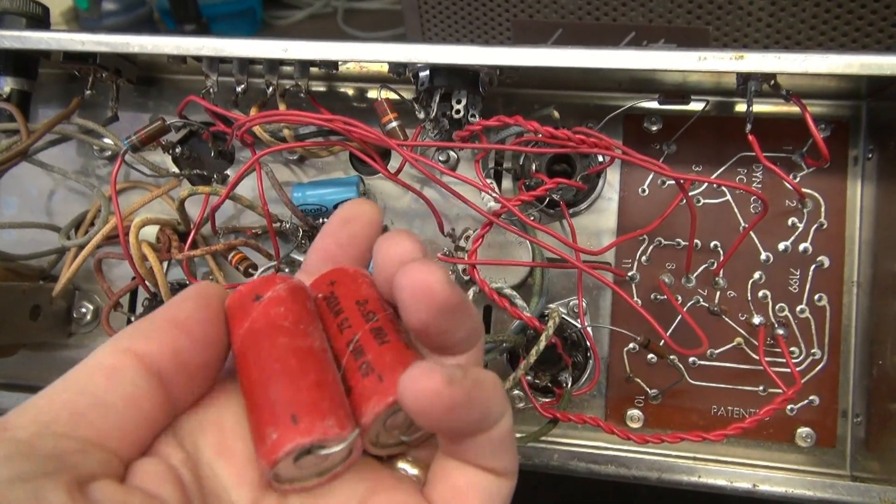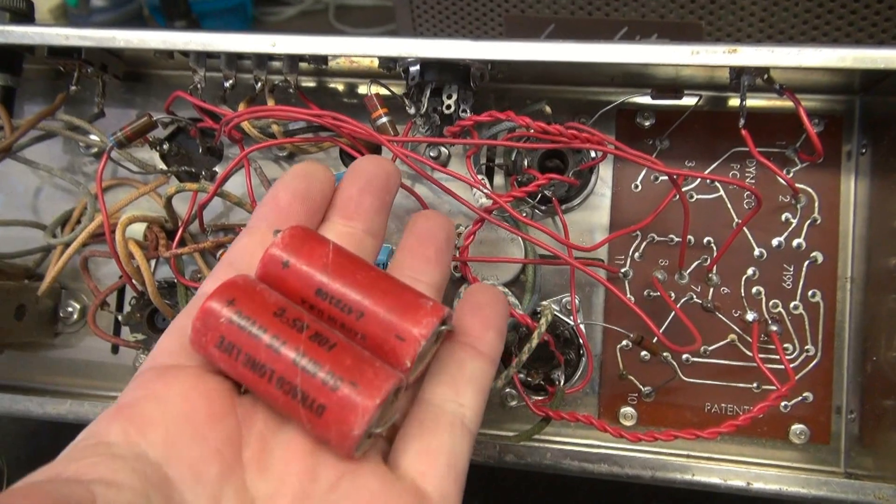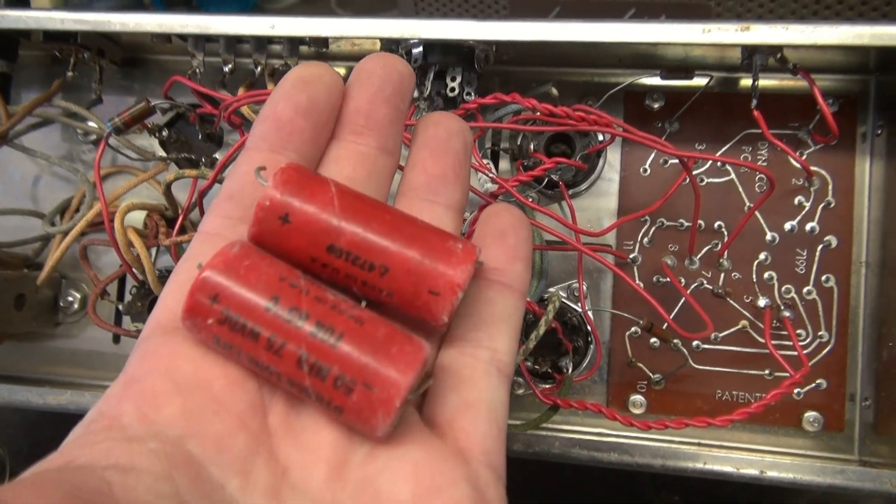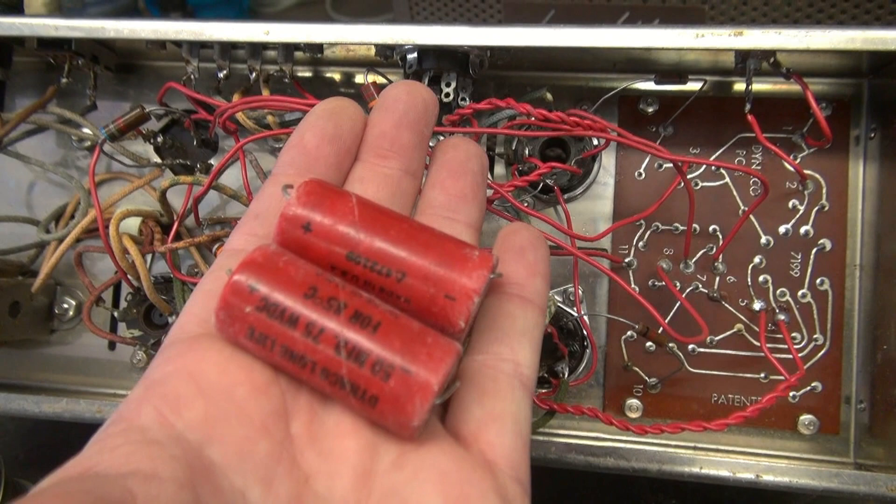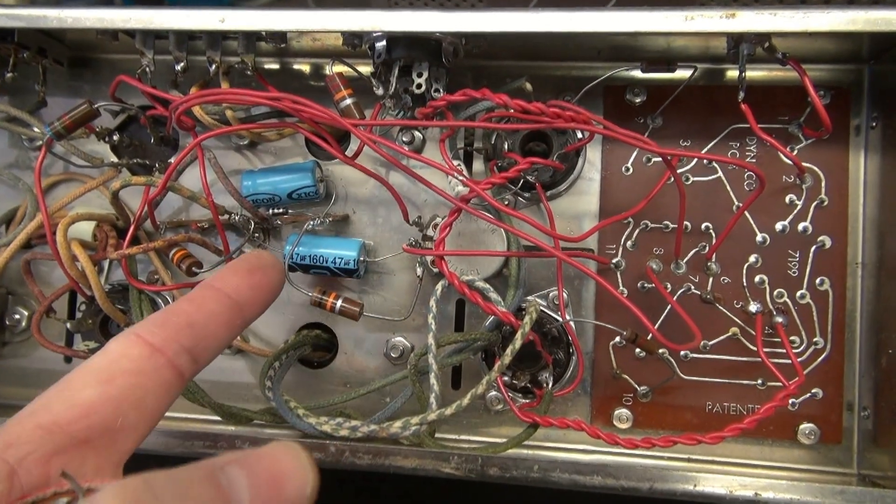First thing you want to do, especially in that negative bias circuit, get those caps out. Don't turn on the amp if you see these old monsters in there. Get fresh in to begin with.